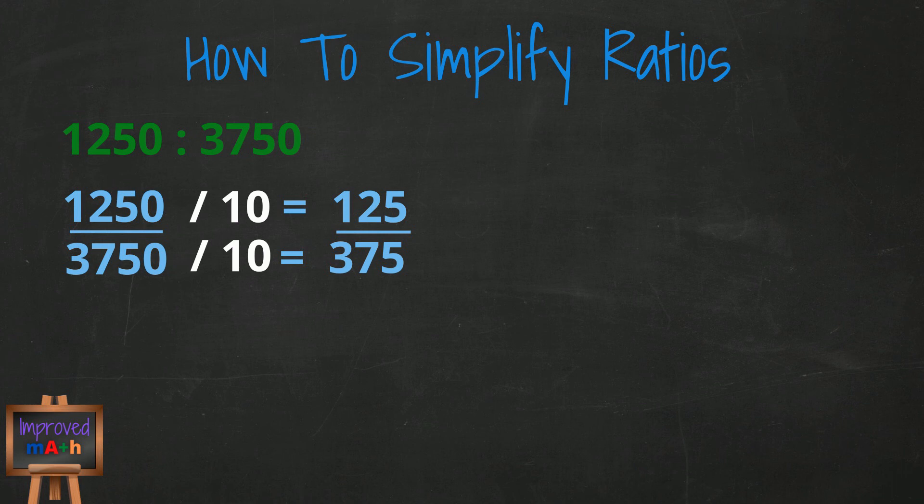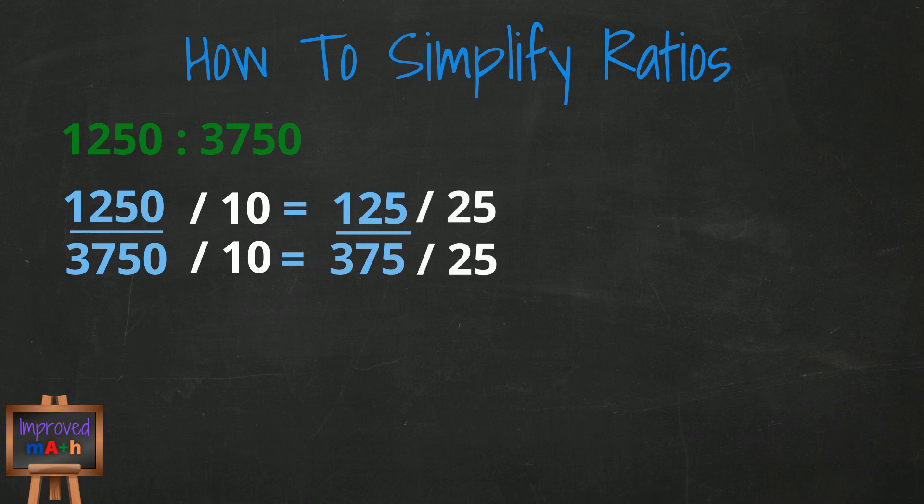Looking at both of these numbers, it appears they could also be divisible by 25. So let's divide them by 25. 125 divided by 25 equals 5. 375 divided by 25 equals 15.